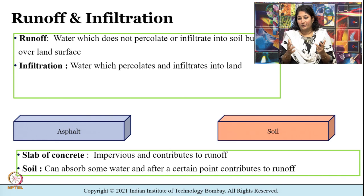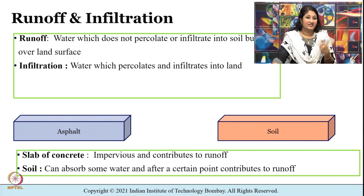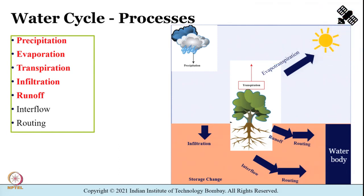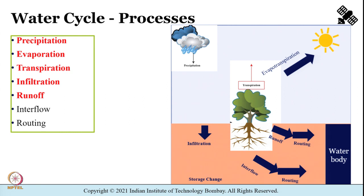How we decide how much contributes to runoff versus infiltration depends on the properties of the soil and, in the case of a hydrological model, on its settings. To summarize so far, we have covered precipitation, evaporation, transpiration, infiltration and runoff through this diagram. Two more processes remain: interflow and routing.